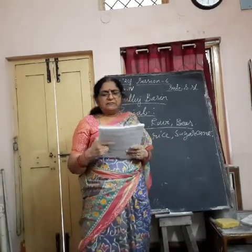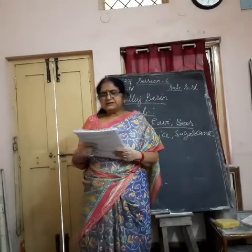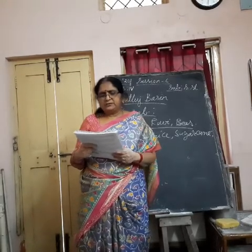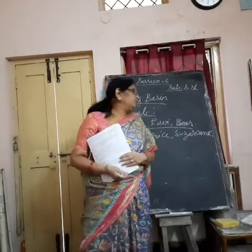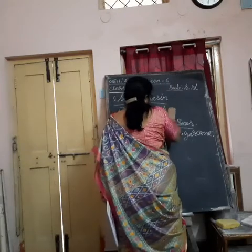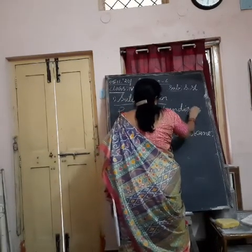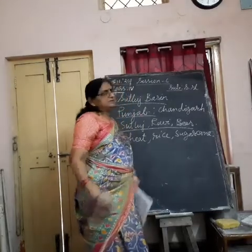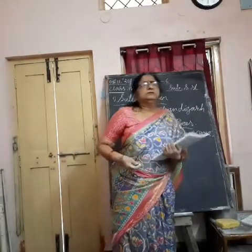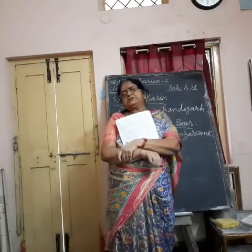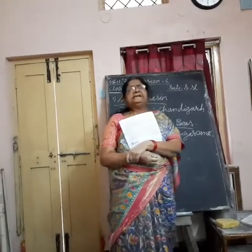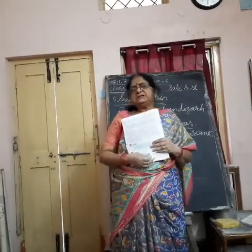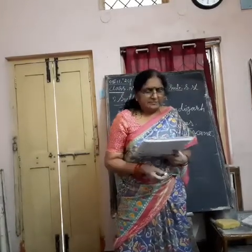Chandigarh is the capital of Punjab. It is a planned city. Amritsar is also a big city in Punjab, famous for its Golden Temple. Other important cities are Jalandhar, Ludhiana and Patiala. Amritsar is a holy place for the Sikhs and is associated with Guru Nanak Dev.